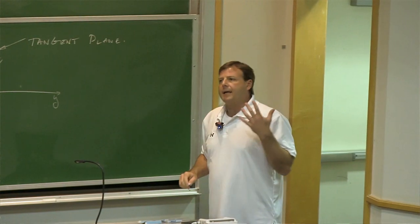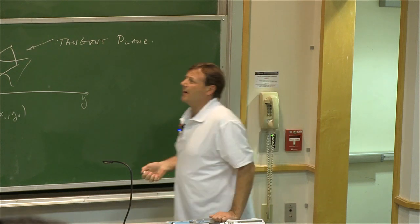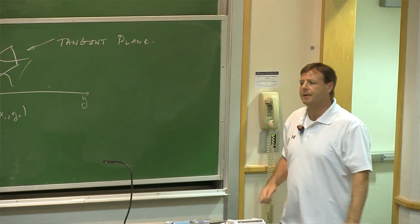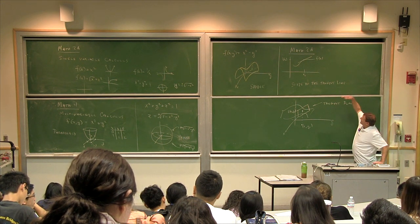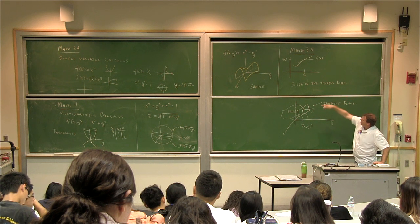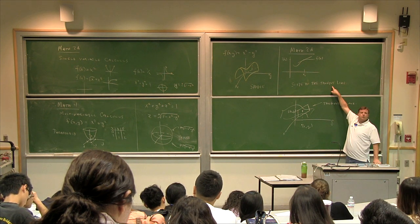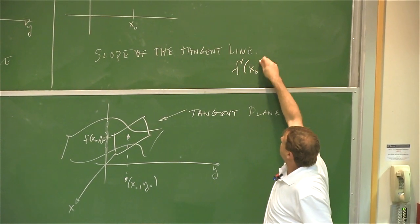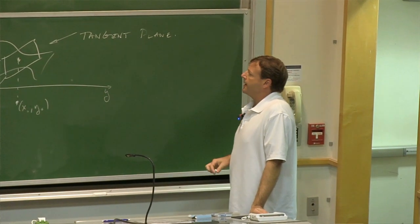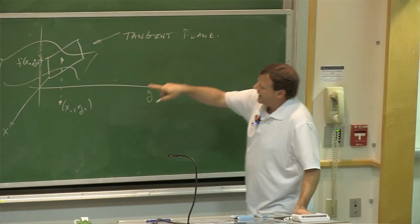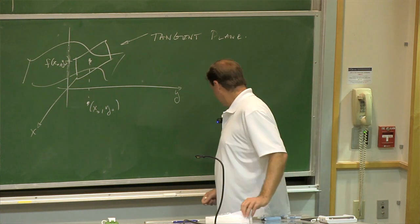The equivalent of the tangent line in multivariable calculus is going to be a tangent plane. In this class we focus on what's appropriate for economics — maxes and mins, optimization. The slope of the tangent line in single variable is f prime at x-naught, the derivative at that point. With two variables and a tangent plane, I'm going to have to have two derivatives.